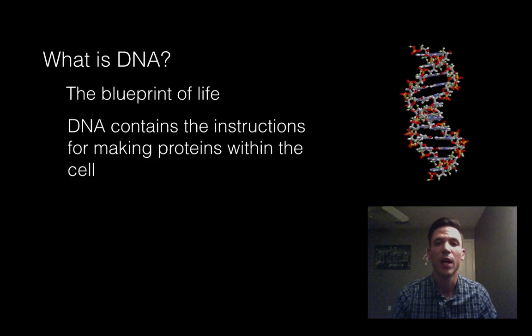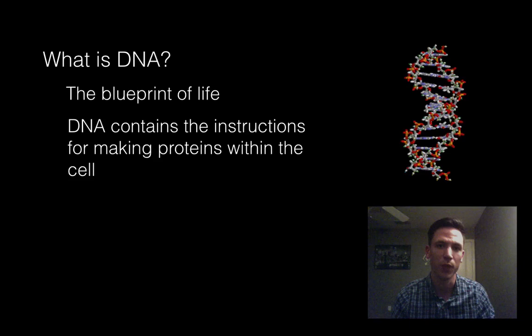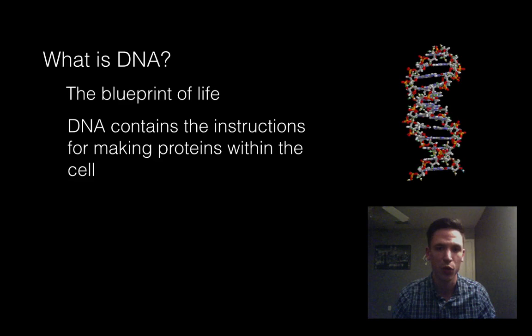So how do we know or how do our cells know which proteins to make? It's all coded for inside our unique DNA. The reason that two people don't look the same other than identical twins is because they have a unique set of instructions and therefore make different combinations of proteins which make them look different.